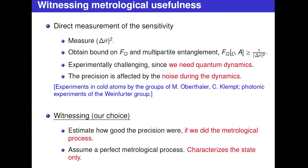What does witnessing metrological usefulness mean? One way to detect metrologically useful entanglement is to measure the variance of theta. If it is smaller than a constant, we know the quantum Fisher information is larger than that constant. The idea is to carry out the metrological process, look at how well we estimate theta, and derive bounds for the quantum Fisher information. This has been done in several experiments.